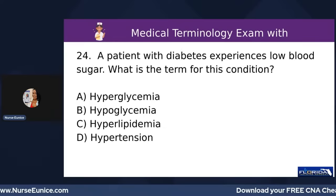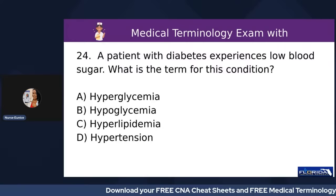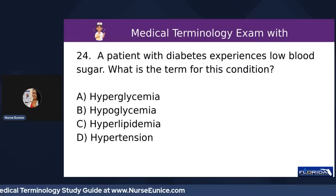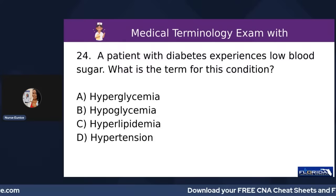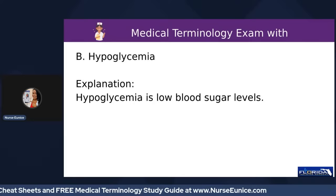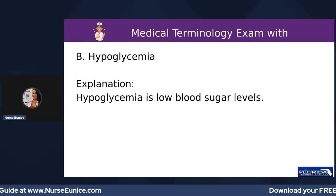Number twenty-four: a patient with diabetes experiences low blood sugar — what is the term for this condition? A) hyperglycemia, B) hypoglycemia, C) hyperlipidemia, or D) hypertension. The answer is B, hypoglycemia — 'hypo' means low — hypoglycemia refers to low blood sugar levels.